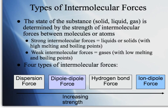The stronger the intermolecular forces, those substances are going to be found usually as liquids or solids. They're going to have high melting points and high boiling points because it's going to take a lot of energy to overcome the forces holding those molecules together. Weak intermolecular forces usually produce substances found as gases, with low melting points and low boiling points.